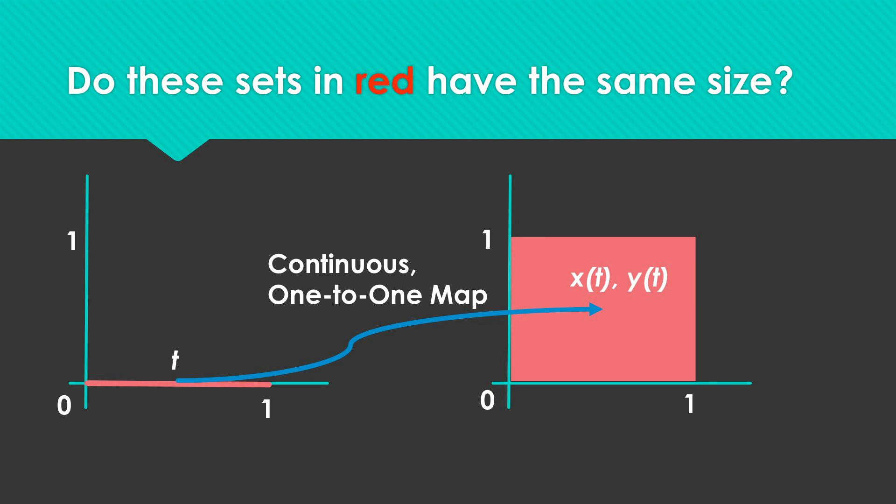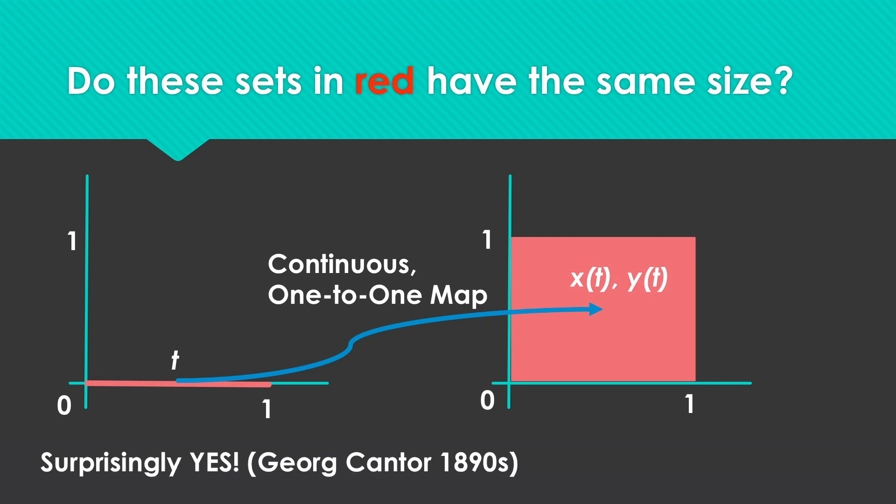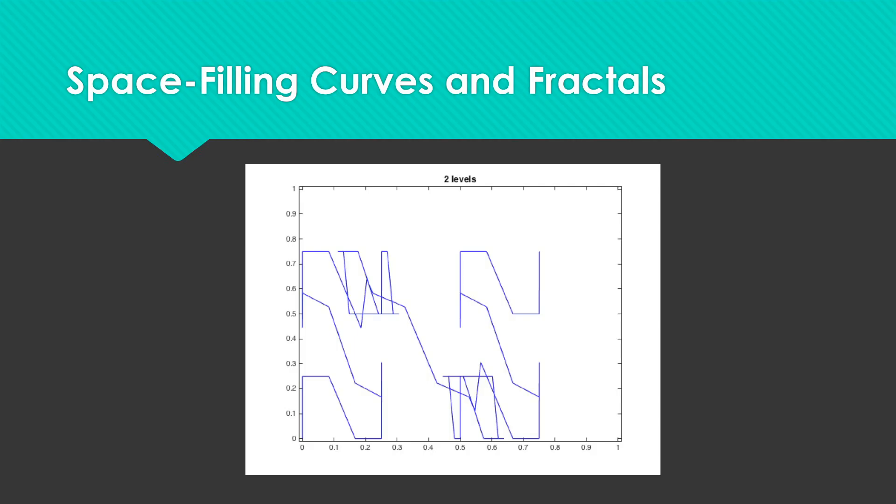You might think this is impossible, but in the late 1800s George Cantor showed that this is possible and in fact we can come up with a continuous map. A continuous map is one in which you can use a pen to draw a line without lifting the pen off the paper. What I'm going to show you is in fact how this continuous map, or a correspondence between points on the line between zero and one and pairs of points in the square, in the unit square, can be linked together.